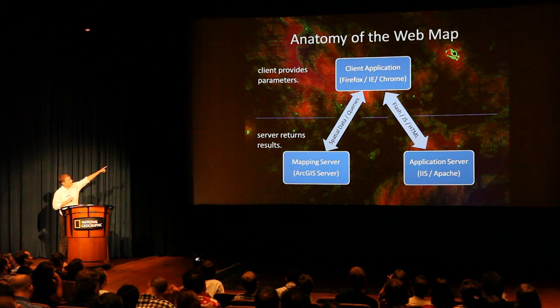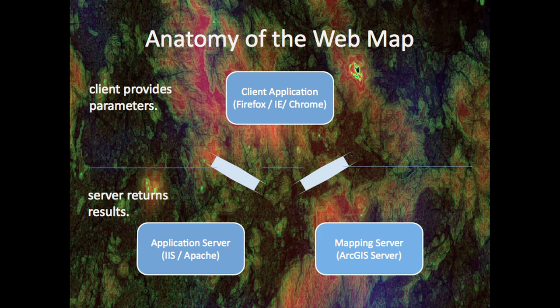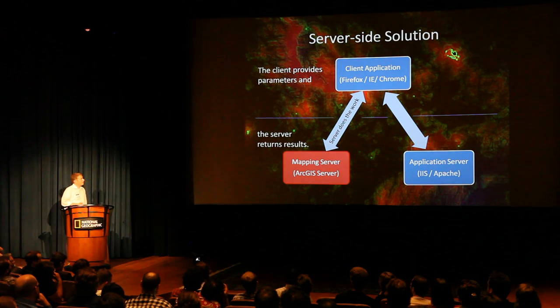Anatomy of a web app: the client application — Firefox — sends parameters and queries to the mapping server, the application server. This is usually how web maps work — they request tiles. With raster analysis it's really no different. You send your user parameters to the server, which crunches every pixel in 50 different rasters and then sends back statistics, an image, or another product.